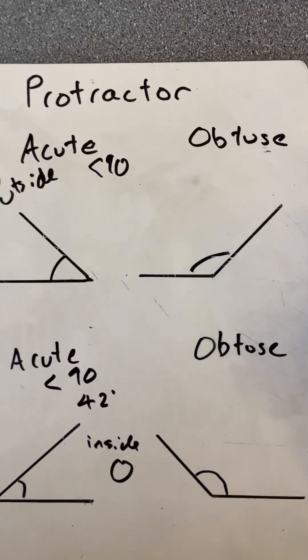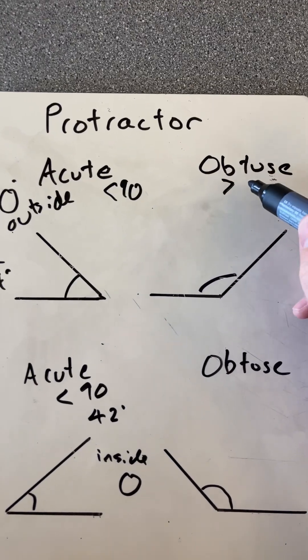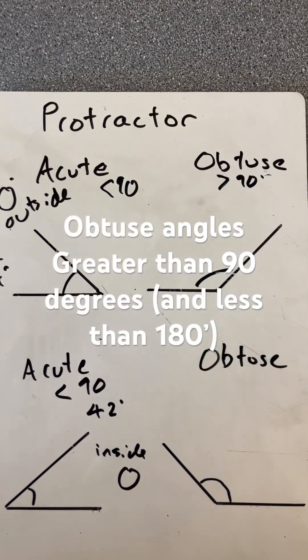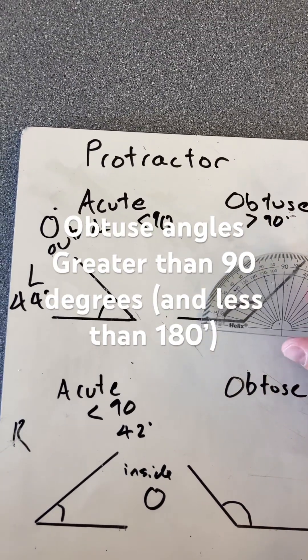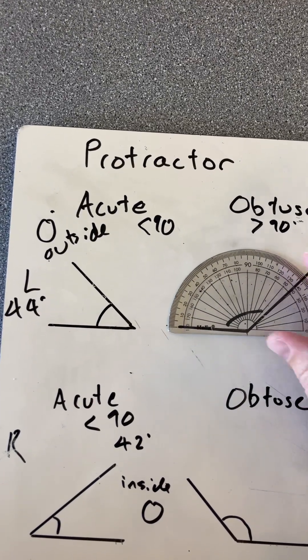If I now go to obtuse angles, I know that obtuse angles are greater than 90 degrees and less than 180. Here's one that opens on the left-hand side, so I lay that flat there.